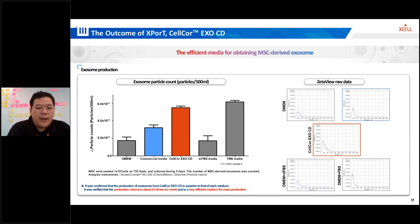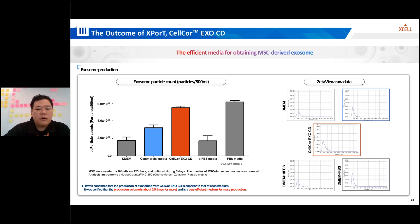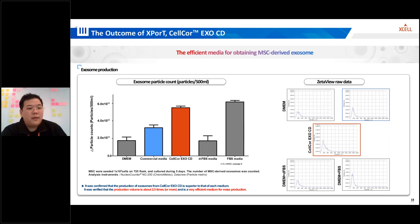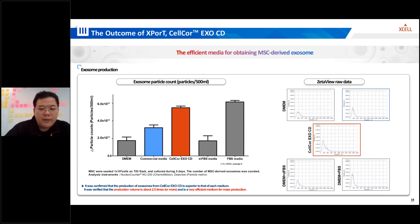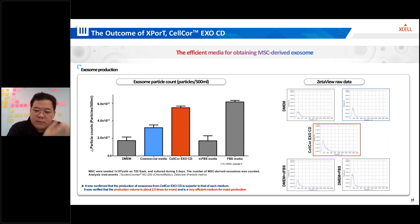Now let's look at efficient media for obtaining MSC-derived exosomes. MSCs were cultured in different media formulations and the number of MSC-derived exosomes was quantified using NTA instruments such as ZetaView nanocytes. The research clearly demonstrates that the CELCO XCD outperforms other media formulations, showing significantly higher exosome production. In fact, CELCO XCD enables approximately 2.5 times greater exosome production, making it an efficient medium for mass production.